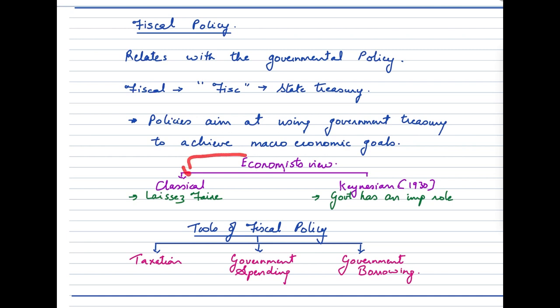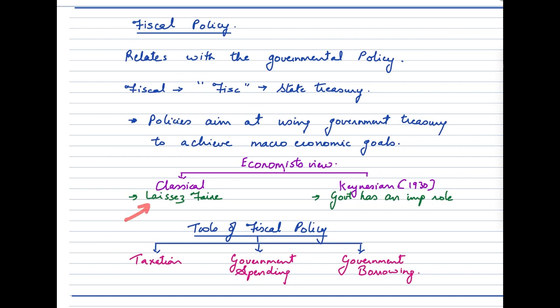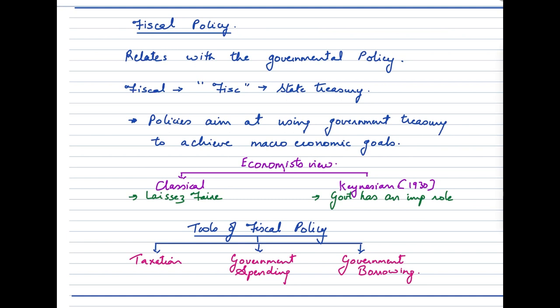There are two schools of thought when it comes to fiscal policy. The first is the classical school, which believed that government should play a bare minimum role in economic activity, focusing mainly on laissez-faire. However, during the 1930s, J.M. Keynes suggested that government has an important role in maintaining economic stability, employment, and growth, and must be an equal participant in achieving macroeconomic objectives.